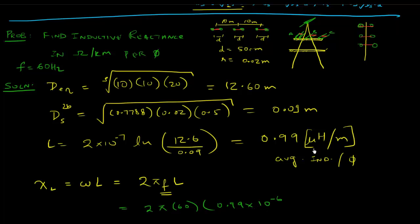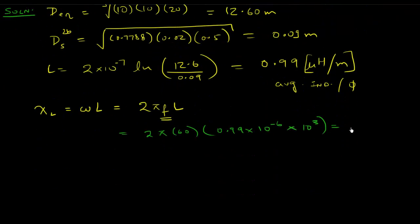Let's plug that in. You have 2π times 60 times 0.99 times 10 to the power minus 6, and this is meters. They've asked us to find in per kilometers, so you're going to multiply that by 10 to the power 3. When you plug this in and calculate it, you should get a value of 0.373.